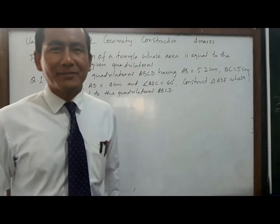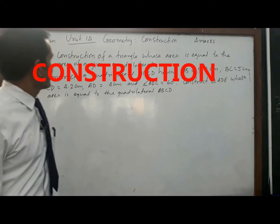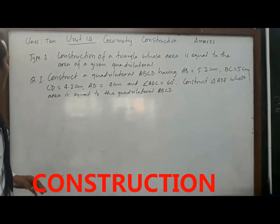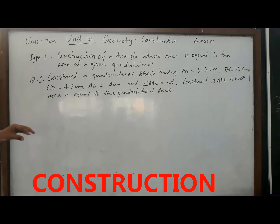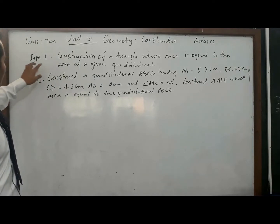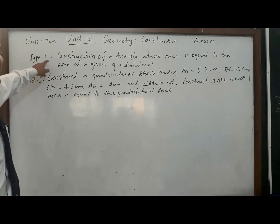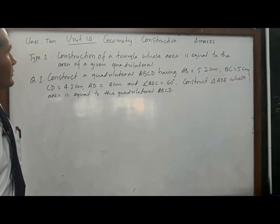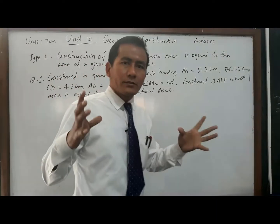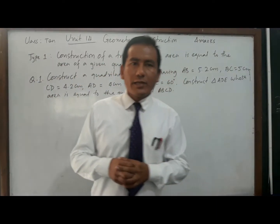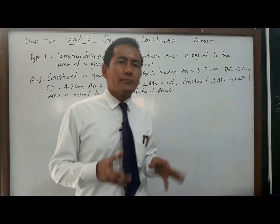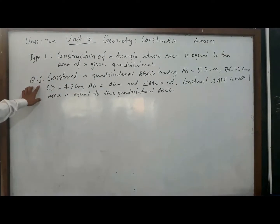Hello, namaskar, this is Kumar Taman. Today I am going to teach construction — they carry four marks for class 10. I am going to teach you different types of construction. Out of five types, today I am going to teach you type one. In type one, I will teach you to construct a triangle whose area is equal to the area of a given quadrilateral. The quadrilateral will be given, and the triangle's area and quadrilateral's area must be equal.